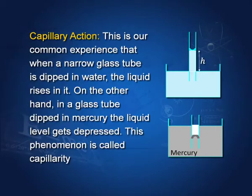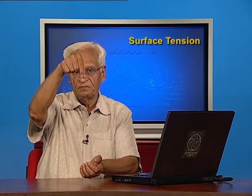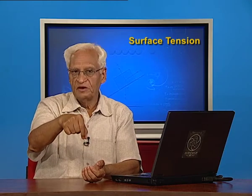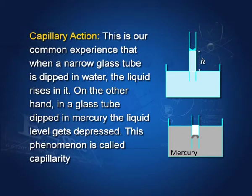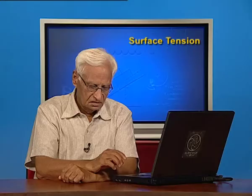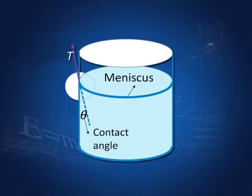It is common experience that when a narrow glass tube is dipped in water, the liquid rises in the tube. On the other hand, in a glass tube dipped in mercury, the liquid level goes down — it gets depressed. This phenomenon is called capillarity. What causes it? Let us try to understand.